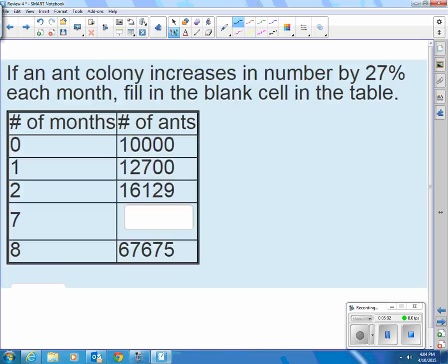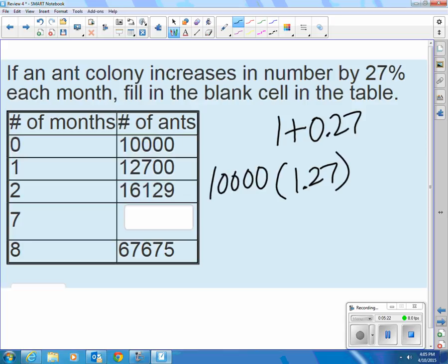And that colony increases in number by 27%. So the increase means that 1 plus 0.27. So that is 1.27 after I add those together. If I multiply that by how many I had to start with, which was 10,000, then that will give me how many I have after 1 month.